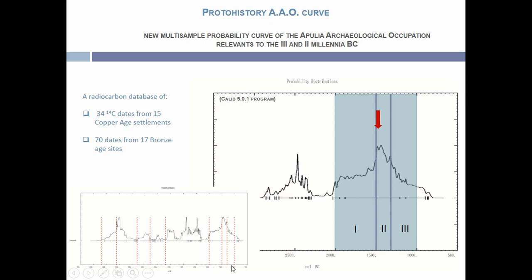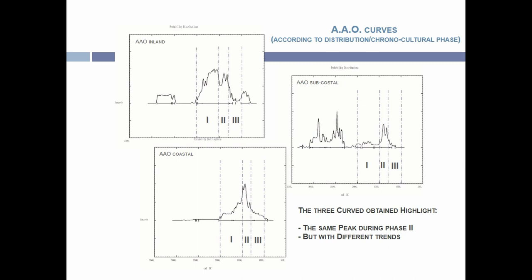This work began 20 years ago. We arrive to define, probably, a peak in human occupation, and this peak is distributed in one of the three phases that normally characterize the Bronze Age in the Apulian region. We try to differentiate the distribution and intensity of population in different sub-regions — coastal, inland, and sub-coastal — and we see the same trend for the peak during the second phase, but with different trends before and after.